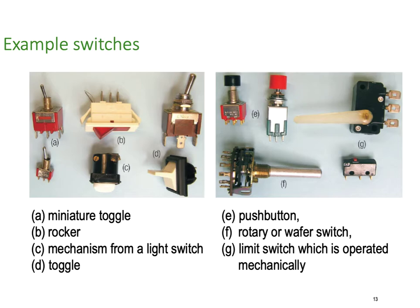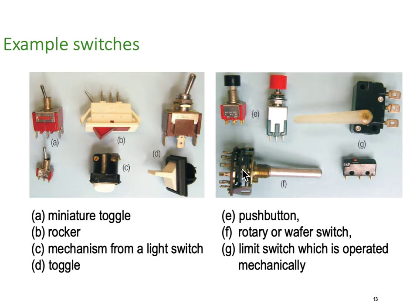Here's a range of switches: A is a miniature toggle; B is a power rocker toggle switch; C is a light switch mechanism; D switches are toggles; E switches are push buttons — you push down to operate them; F is a rotary selector or wafer switch; and G switches are limit switches with a mechanical arm that operates the contacts.